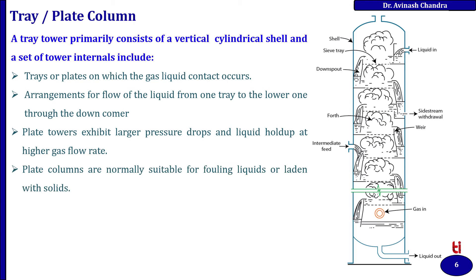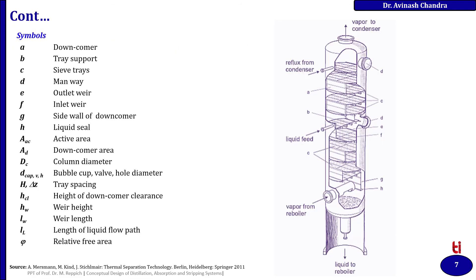The parts of the column are shown here with their symbols. This includes flux from condenser, vapor to condenser, liquid feed, vapor from the reboiler, and liquid to the reboiler. The labeled components are: A for downcomer, B for tray support, C for sieve tray, D for manway, E for outlet weir, F for inlet weir, side wall for diameter, side wall for downcomer, liquid seal, active area, downcomer area, and column diameter.